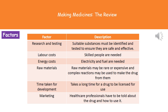In the table there you can see all these different factors and a quick description about them. The research and testing stage is where we have to carry out all these different tests to make sure that what we've made is safe and effective, and obviously the research part is finding a chemical to even carry out those tests on. The second factor is labor costs — basically paying people's wages. We need very skilled people and skilled people have to be paid, so the more people we need the higher the labor costs will be.